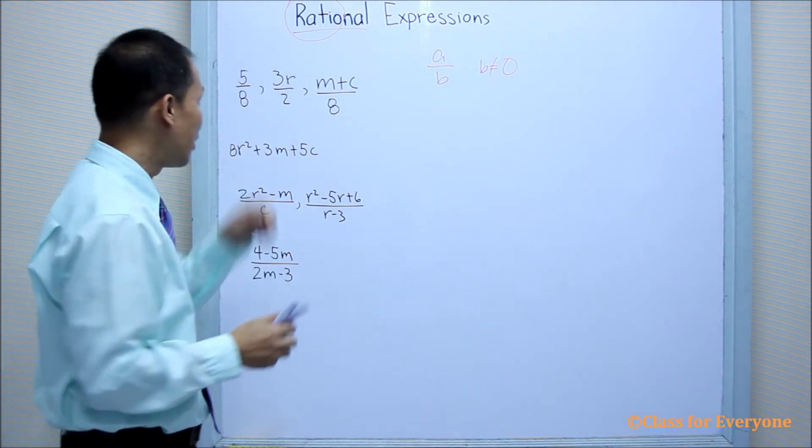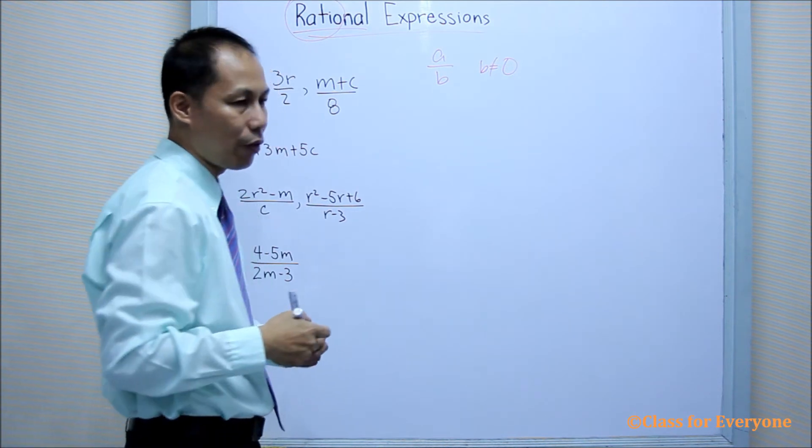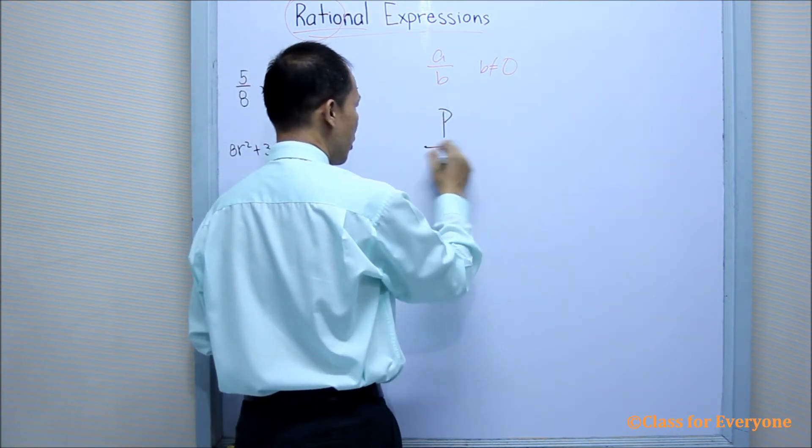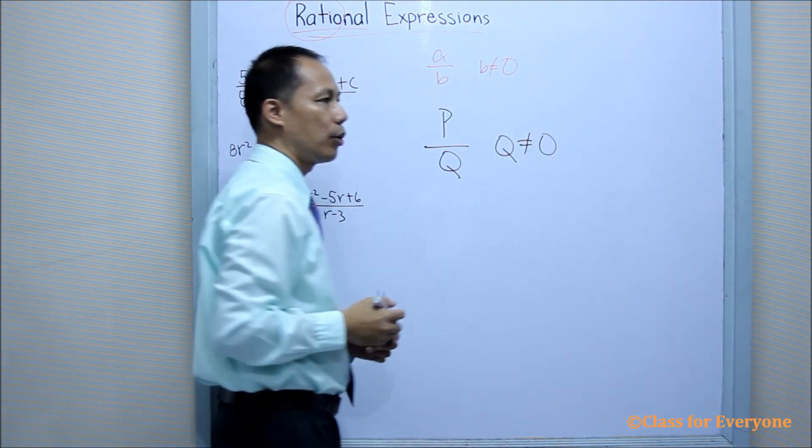Similarly, in a rational expression, it can be presented or written in two polynomials P over Q, where Q is not equal to zero.